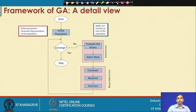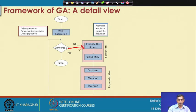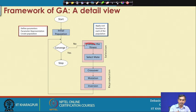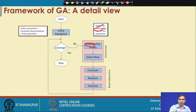Once the initial population is generated, we check whether it already contains the optimum result — the best solution. If yes, we can stop; if not, we proceed to the next population generation, which requires two tasks: selection and reproduction. These tasks evaluate the fitness of a solution — how good the solution is — using some cost function to calculate the fitness value of each individual.